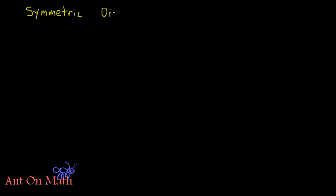I'll go ahead and write that out: symmetric difference. Now usually when we think of a difference we think of subtraction, and in a certain sense there is some subtraction going on here, but how we denote this is — if I have two sets A and B — I'm going to write the symmetric difference as A plus B. This plus sign does not mean addition; it is a binary operation which we define to be the symmetric difference between these sets.